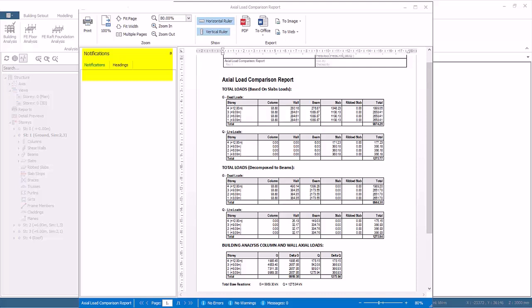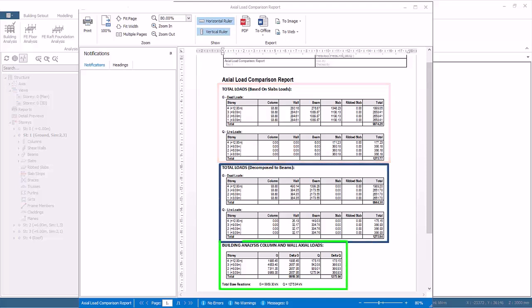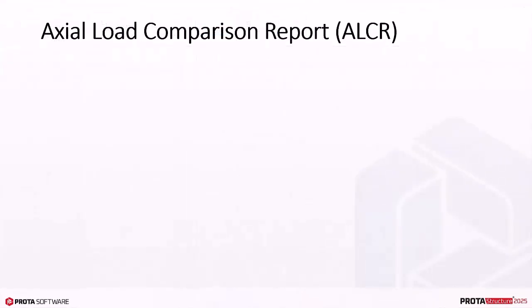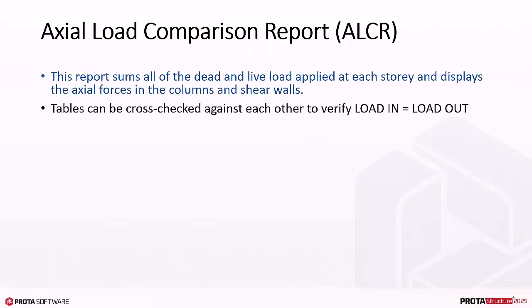At the right is the notifications pane. Important messages may be displayed here. Notice that the axial load comparison report shows various tables with figures for each story and sum of all stories. We will now go through this report in detail. The axial load comparison report, or ALCR, sums all of the dead and live load applied at each story and displays the axial forces in the columns and shear walls. Tables can be cross-checked against each other to verify load in equals load out.